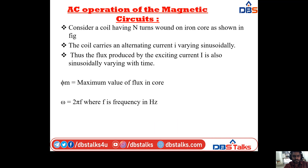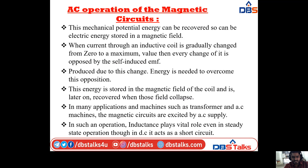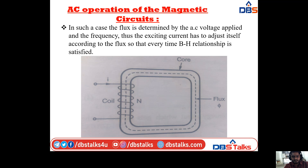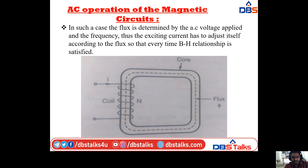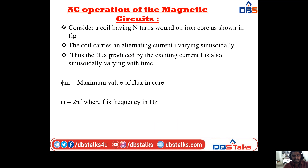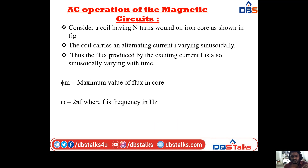Consider a coil of N turns wound on an iron core carrying alternating current i. The flux produced by this current is also sinusoidally varying. Let φm be the maximum value of flux and ω = 2πf, where f is the frequency in Hz. According to Faraday's law, as flux changes, the EMF induced is e = N dφ/dt.